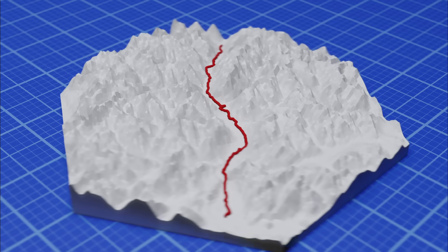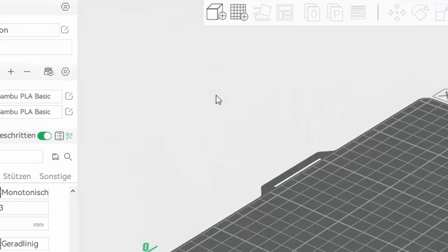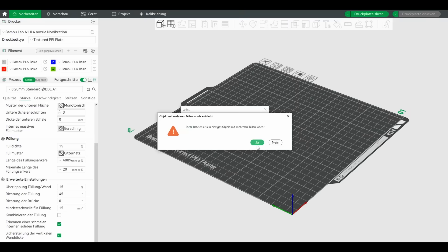Doing that for every point results in a replica of the real-world terrain. It generates two separate STL files that I can now load into my slicer, one of the map and one of the path.